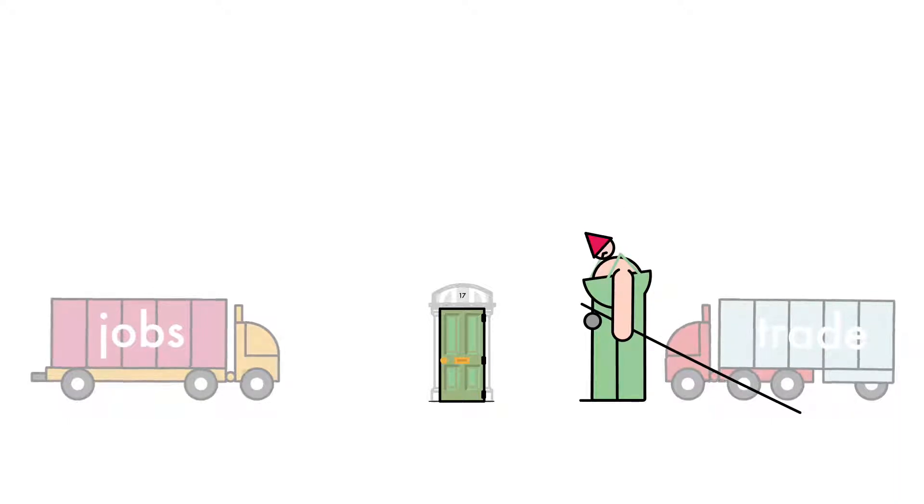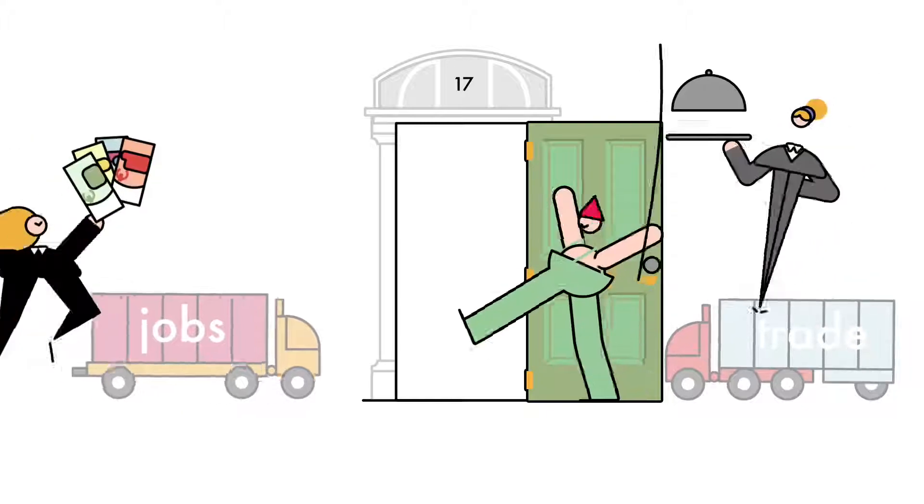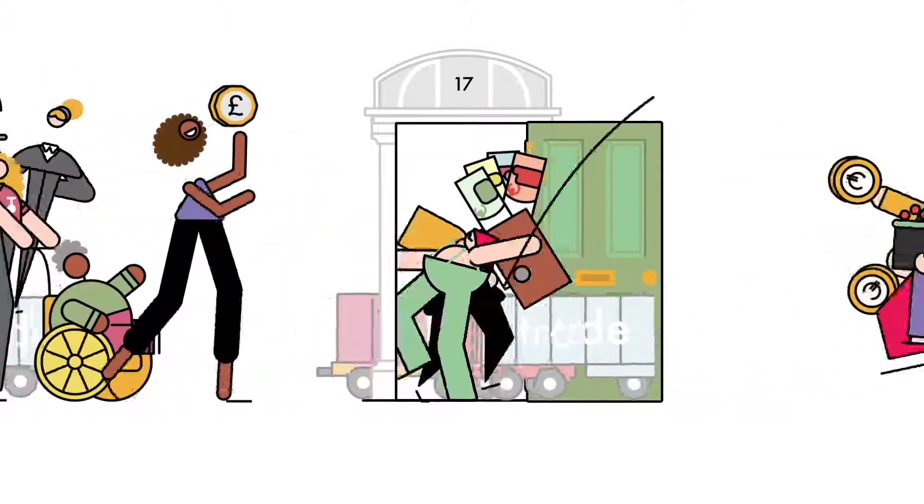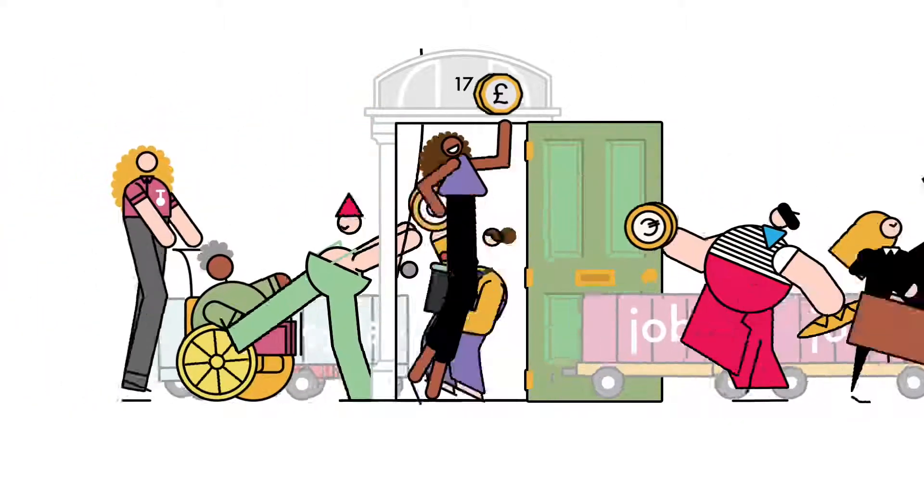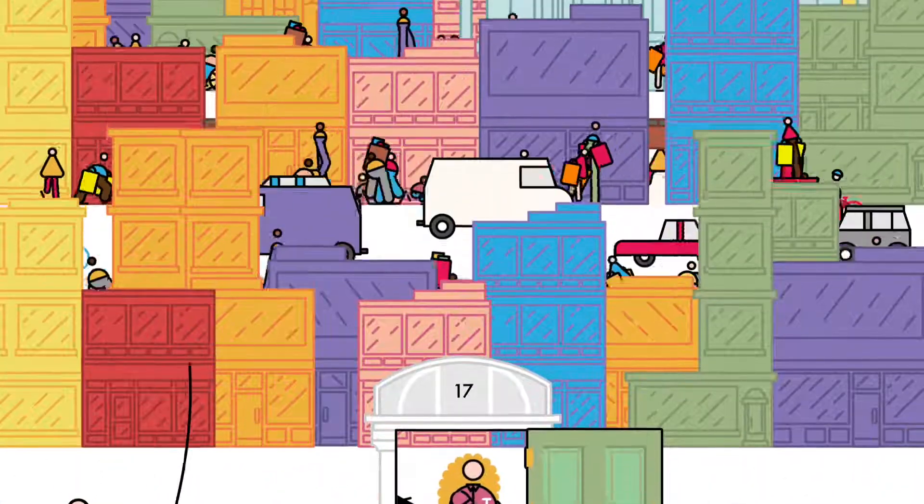Or the government can allow EU migration to continue so that EU migrants can help meet skill and labour shortages and contribute to the public purse. Because whatever else you might think about immigration, the evidence on this is clear.